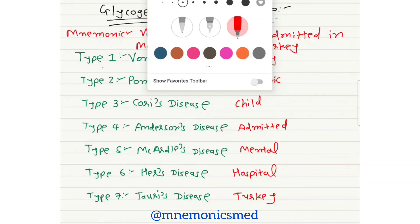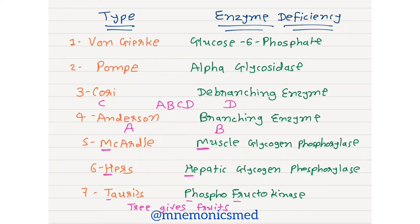Breaking down the mnemonic: 'Very' is for von Gierke's (type 1), 'Psychotic' is for Pompe's (type 2), 'Child' is for Cori's (type 3), 'Admitted' is for Anderson's (type 4), 'In' is for McArdle's (type 5), 'Mental' is for Hers' (type 6), and 'Hospital In Turkey' is for Tarui's (type 7). Now for enzyme deficiencies: Anderson's disease is a branching enzyme deficiency; Cori's disease is a debranching enzyme deficiency — remember A, B, C, D. Von Gierke's disease is glucose-6-phosphatase deficiency; Pompe's disease is alpha-glucosidase deficiency. McArdle's disease has a deficiency of muscle glycogen phosphorylase; Hers' disease has hepatic glycogen phosphorylase deficiency.